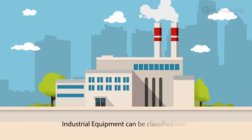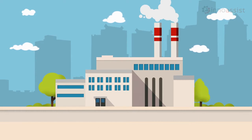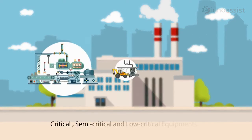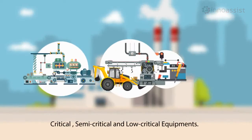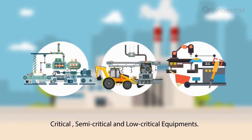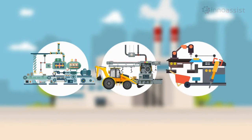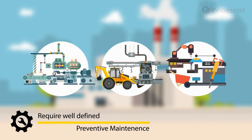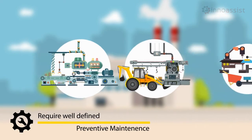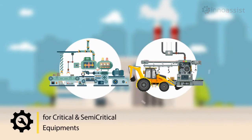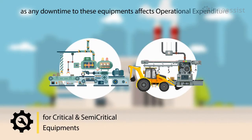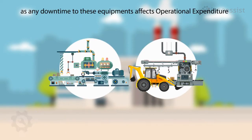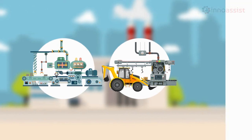Industrial equipment can be classified into critical, semi-critical, and low critical equipment. It is very important to have a well-defined preventive maintenance for critical and semi-critical equipment, as any downtime to these equipment affects operational expenditure.